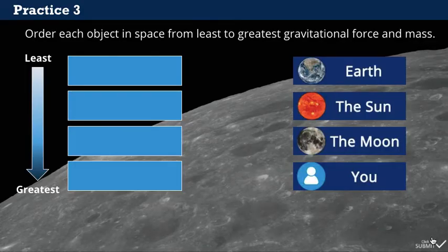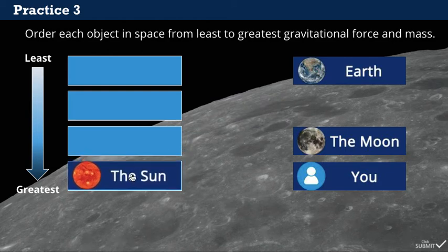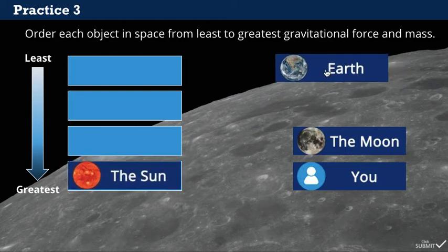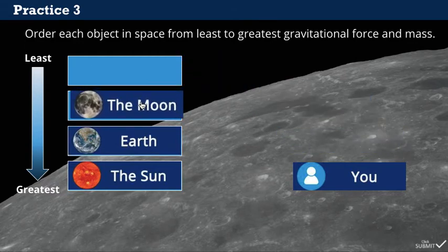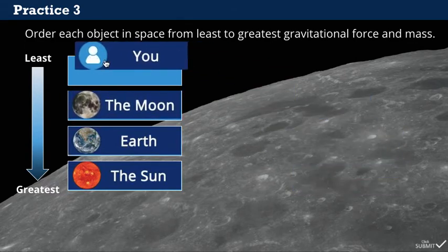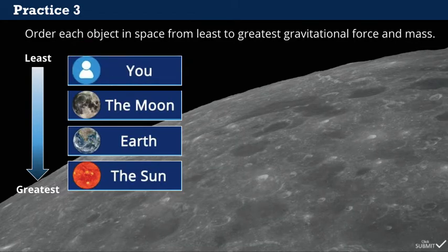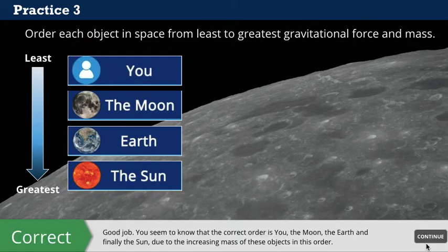Let's practice. For this question, drag and drop to order these objects in space from least to greatest gravitational force and mass. Good job! You seem to know that the correct order is you, the Moon, the Earth, and finally the Sun, due to the increasing mass of these objects in this order.